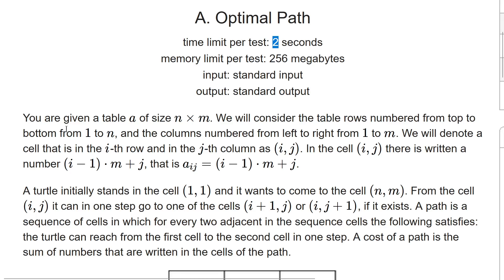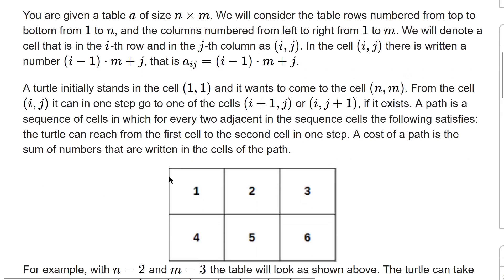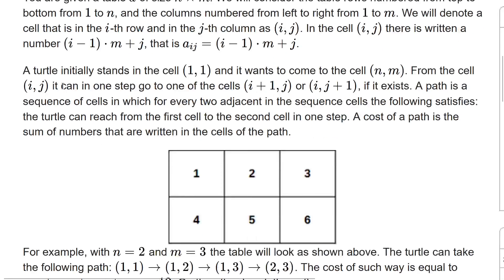You are given a table A of size n×m. Rows are numbered from top to bottom, 1 to n, and columns are numbered from left to right, 1 to m. We denote the cell in the i-th row and j-th column as (i,j). In cell (i,j) there is written a number: a[i][j] = (i-1)*m + j, where i is the row number, m is the total number of columns, and j is the column number.